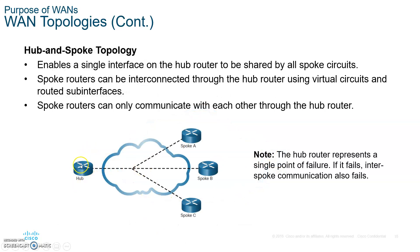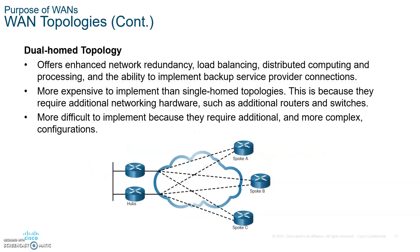Hub-and-spoke is when you have, for example, headquarters with a bunch of remote branch offices. Frame Relay used to be an old legacy WAN protocol famous for hub-and-spoke connectivity. Dual home is when, for redundancy purposes, you have two routers so that if one breaks, the remote branch offices will always remain connected. It's a little more expensive, but there is no central point of failure, so branch offices across the nation can always connect to the central office.